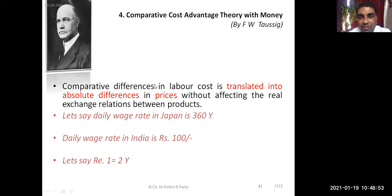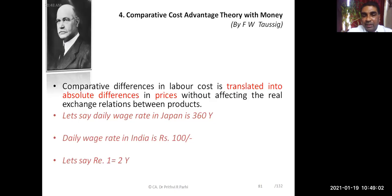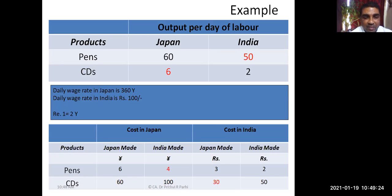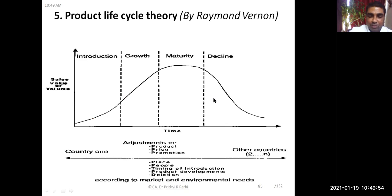The comparative cost advantage theory with money converts the advantage into monetary terms. Assuming the exchange rate is rupees 1 equal to 2 yen, the daily wage rate in India is rupees 100, and in Japan is 360 yen. On that basis, India-made paints are cheaper in Japan and Japan-made CDs are cheaper in India. Therefore, India should produce paints and Japan should produce CDs.